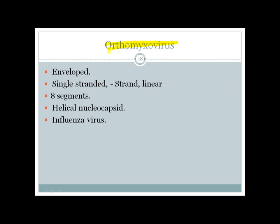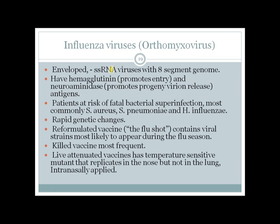Orthomyxovirus is a very important RNA virus. From the mnemonic 'always bring polymerase or fail replication,' O is for Orthomyxovirus — so these are negative-strand RNA viruses. Orthomyxovirus also has a segmented genome with eight segments, part of the BOAR mnemonic (Bunyavirus, Orthomyxovirus, Arenavirus, Reovirus). The most important member of the Orthomyxovirus family is Influenza virus.